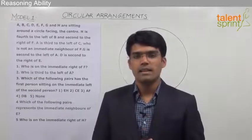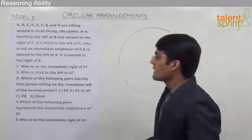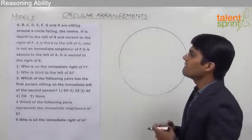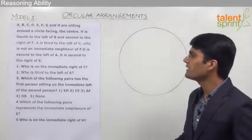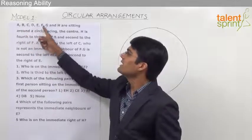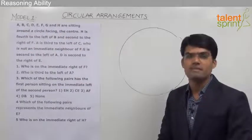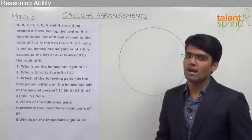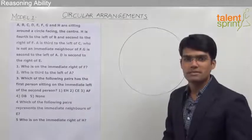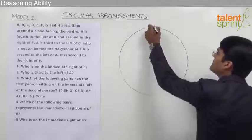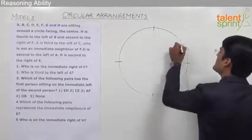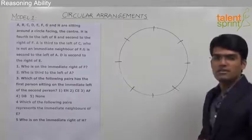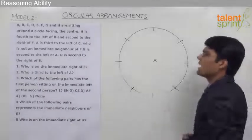With this knowledge, let us now solve the given circular arrangement. The question is: A, B, C, D, E, F, G, and H are sitting around a circle facing the center. There are eight persons who are sitting around the circle facing the center. The first rule before we solve any circular arrangement is to count the number of persons and mark their positions. So let us mark the eight positions around the circle. These are the eight positions and we know that all of them are facing the center.